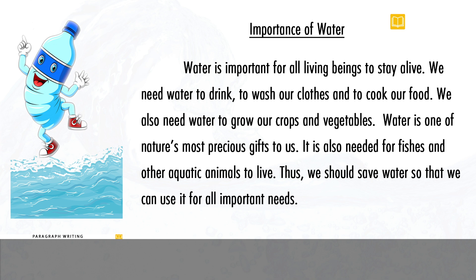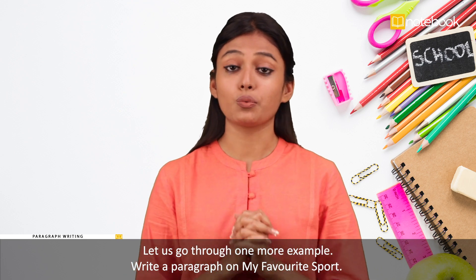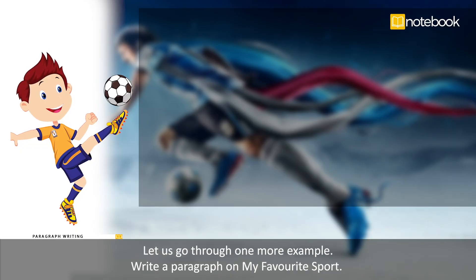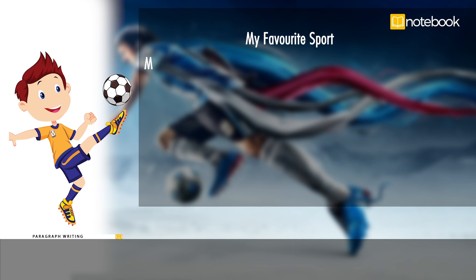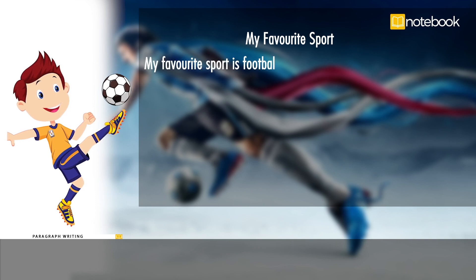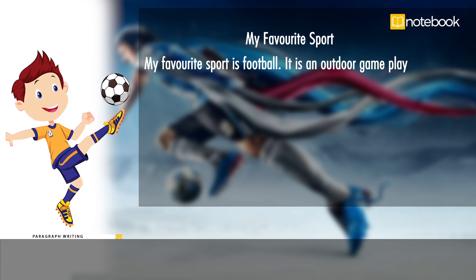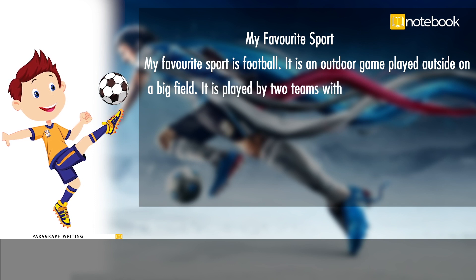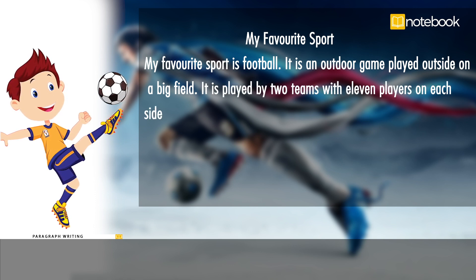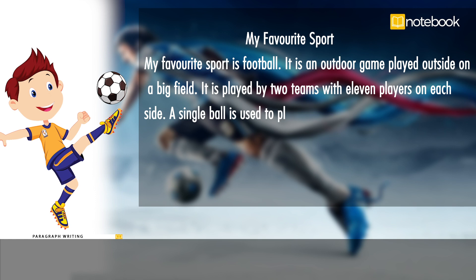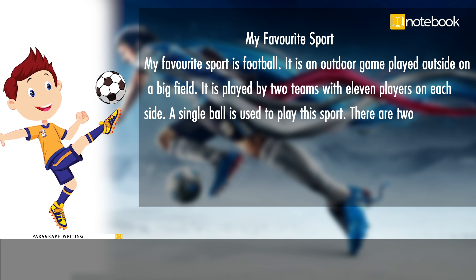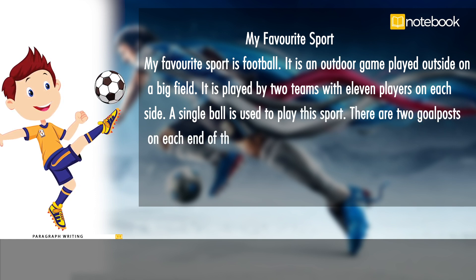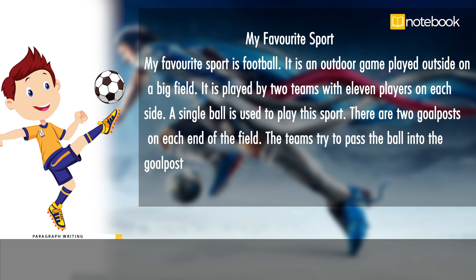Let us go through one more example. Write a paragraph on my favorite sport. My Favorite Sport: My favorite sport is football. It is an outdoor game played outside on a big field. It is played by two teams with 11 players on each side. A single ball is used to play the sport. There are two goal posts on each end of the field. The teams try to pass the ball into the goal post of the opposite team to score points.